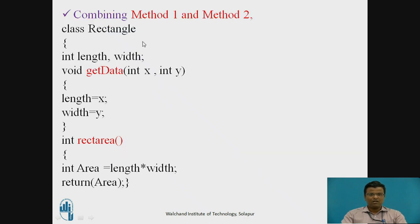After combining method one and method two: the getData method consists of the declaration of the variables, and the rectArea method consists of the declaration of the area of the rectangle.